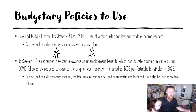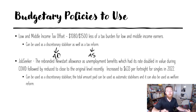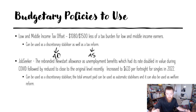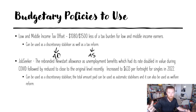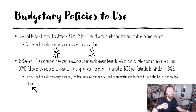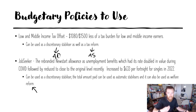We also have JobSeeker, which is what they rebranded Newstart Allowance to — the unemployment benefits people receive on welfare. It had its rate doubled during COVID and then reduced close to the original level recently. It's increased to $633 per fortnight for singles in 2022. This can be used as a discretionary stabilizer when talking about changing the rate of welfare paid, or the total amount of welfare paid can be used as an automatic stabilizer. It can also be used as a welfare reform, as the recent increase to welfare may de-incentivize people from seeking work, potentially leading to more labor shortages and restricting aggregate supply overall.